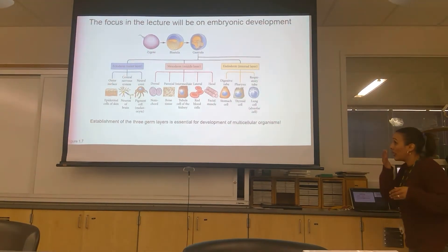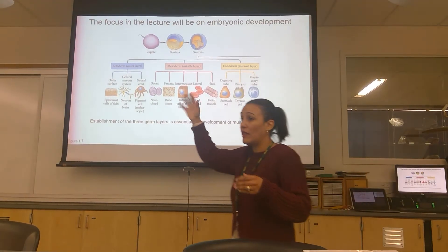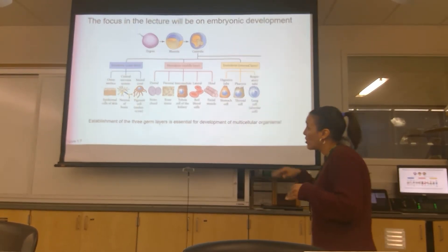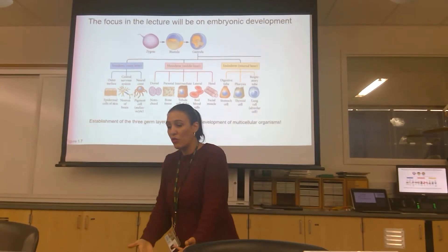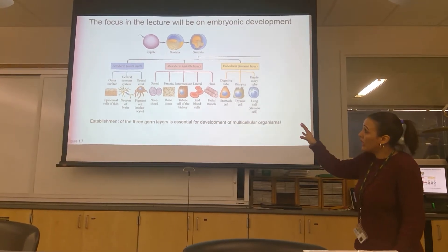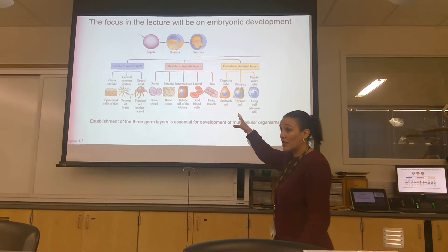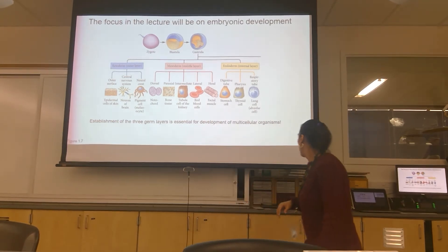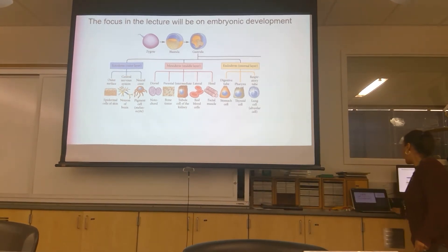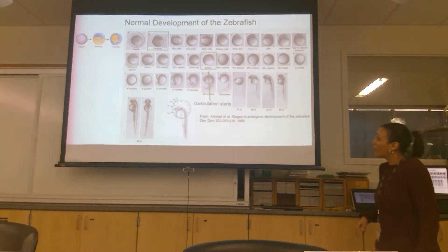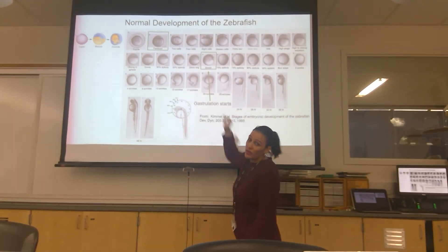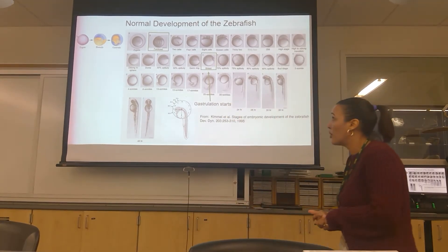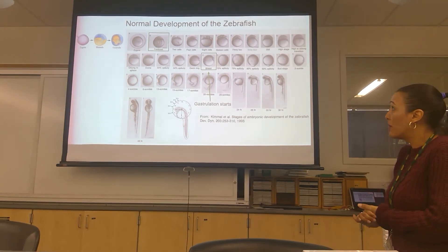As we go from blastula to gastrula, the gastrula is the stage where the cells start to move around that yolk ball. The gastrula stage is super important because that's when the three germ layers become established. That transition coincides with the shield stage in zebrafish embryonic development, making it a very important time point.